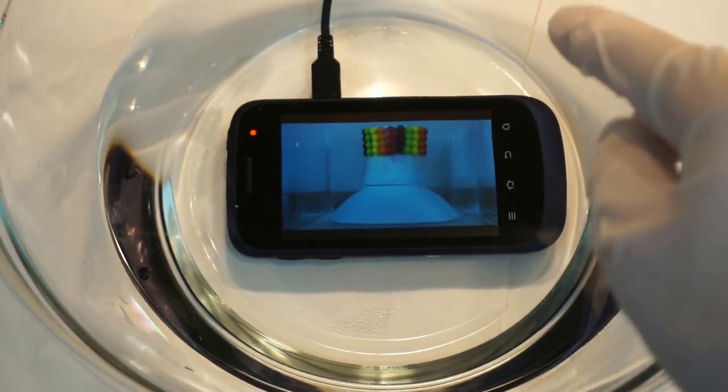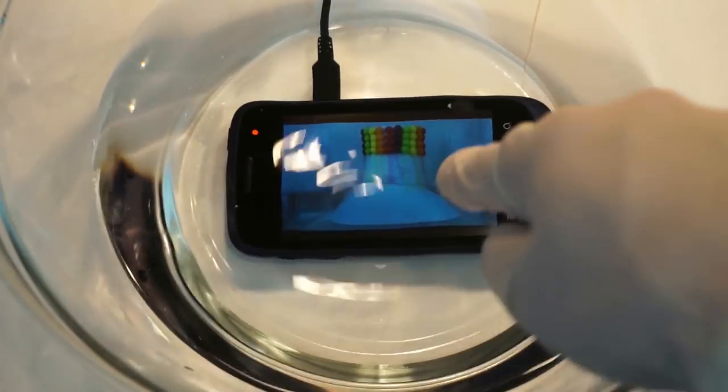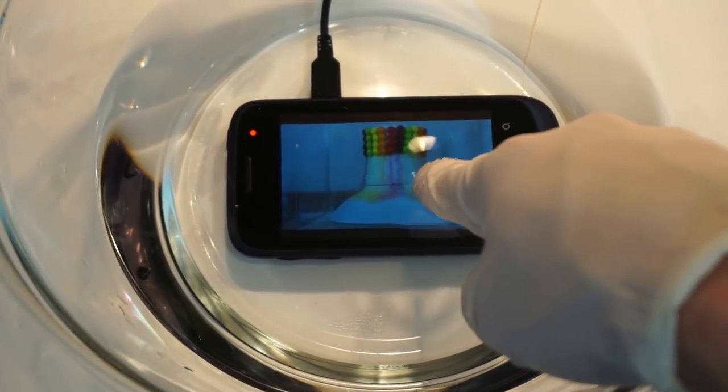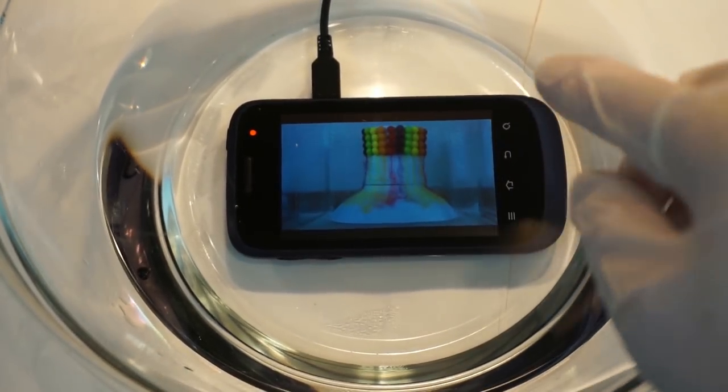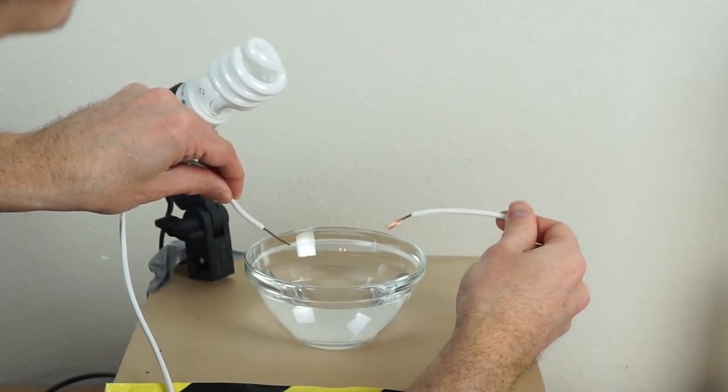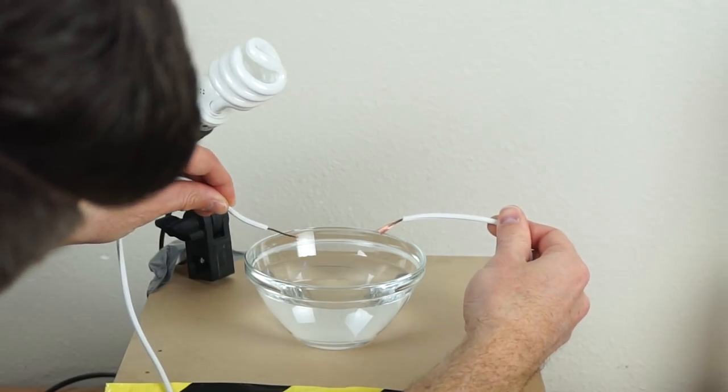So I showed in a previous video when you put electronics in DI water, they're still able to function. So I wanted to take that a bit further and test with higher voltages if you would get shocked if you touch DI water that was electrified. So first I'll test it with a 120 volt wall source and then I'll test it with higher voltage like 3000 volts.